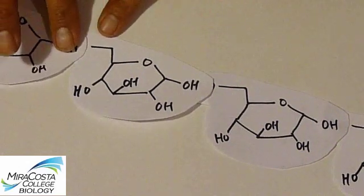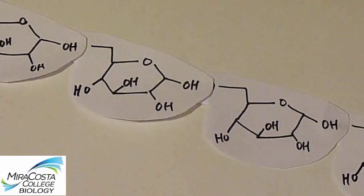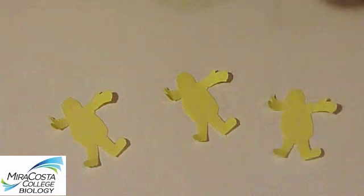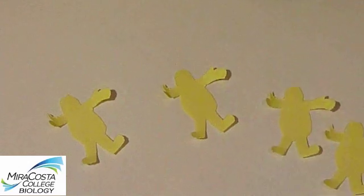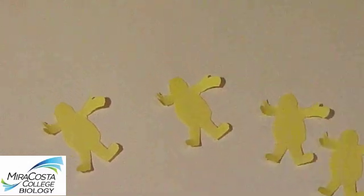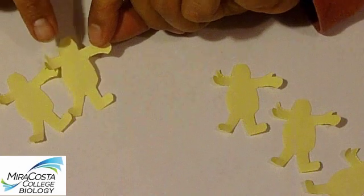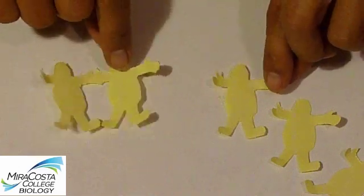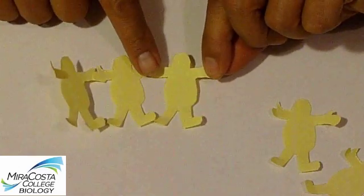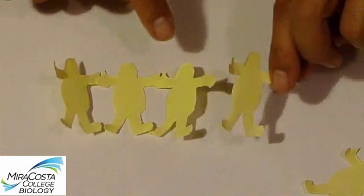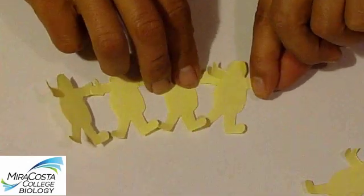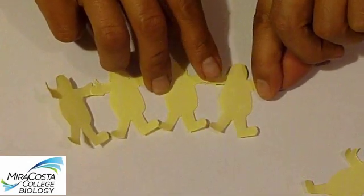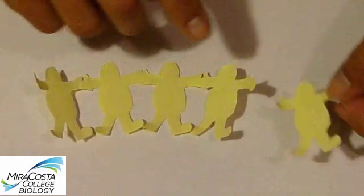Sometimes, however, you can have the monomer units coming in with their own glue, kind of like little figures cut out of post-it notes. No outside glue is required because the building blocks come with their own adhesive, prepared to stick to the next molecule. So you can form chains without having to worry about adding energy from an outside source, if you start off with monomer units that come pre-charged with their own energy.